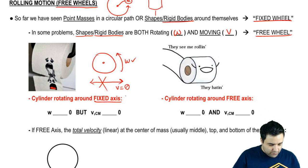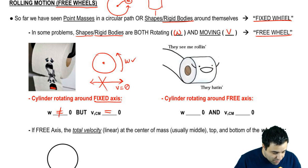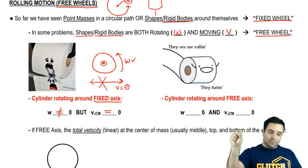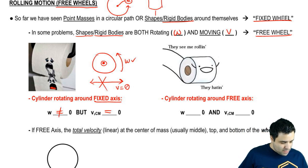Now, so in this case, W is not zero, but V of the center of mass is zero. The middle, center of mass in the middle, the middle of the cylinder doesn't move. It stays in place.